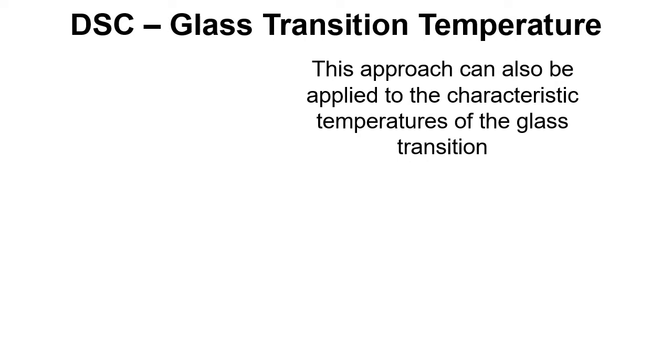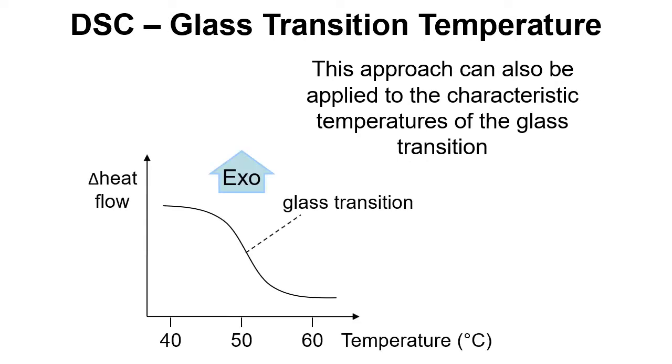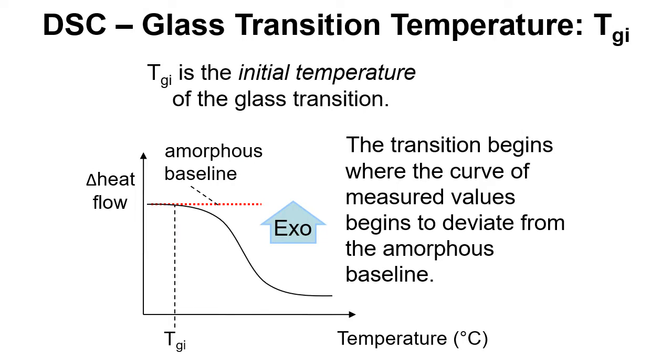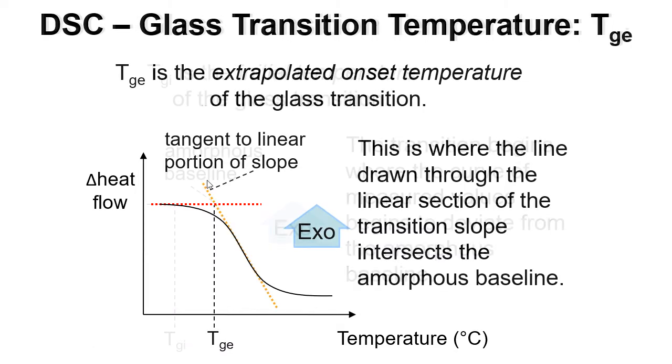Glass transition we can use a very similar approach. We have a change in the baseline and we can talk about a number of characteristic temperatures again. We've got TGI, subscript GI referring to glass transition and I referring to initial temperature of the glass transition. TGI is where this curve starts to depart from the baseline that we've drawn in from the flat portion of our trace. We can have the extrapolated onset temperature for the glass transition temperature so this is TGE and this is where we draw a tangent through the steepest part and look at where that crosses the baseline.